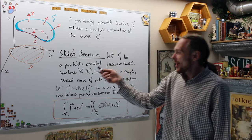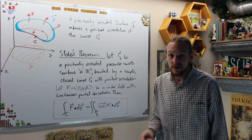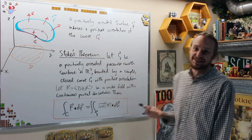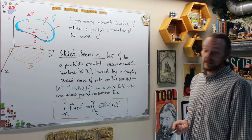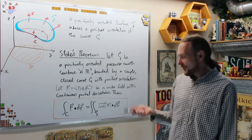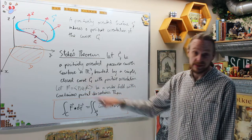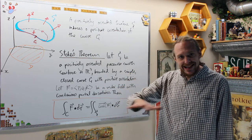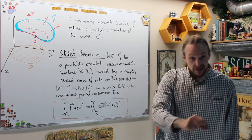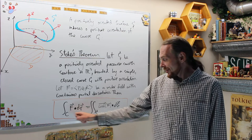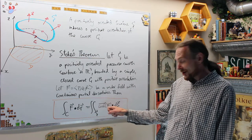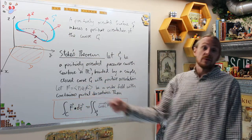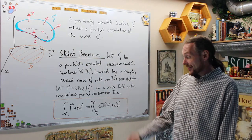Stokes Theorem says: let S be a positively oriented piecewise smooth surface in R³, bounded by a simple closed curve with positive orientation. Let F be a vector field in R³ with continuous partial derivatives. Green's Theorem connects a double integral over a region D to a line integral around its boundary. Stokes Theorem says the surface integral of the curl of F over the surface equals a line integral of F over the boundary curve C — it's the higher-dimensional analog.